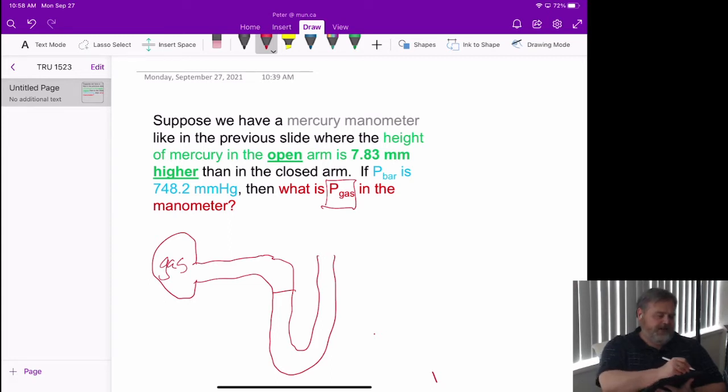Let me just actually undo that because I need to make sure that I draw things so that the open end has a higher height of mercury than the closed end. And that's millimeters of what? Millimeters of mercury, which we've seen as an equivalent to pressure.